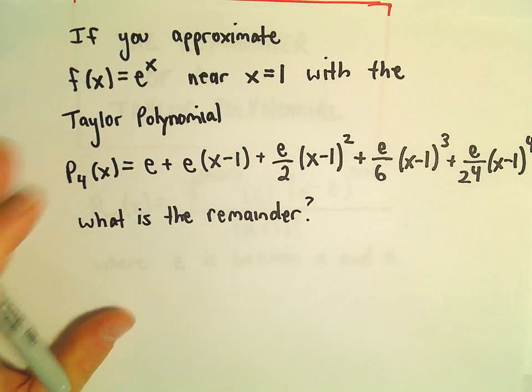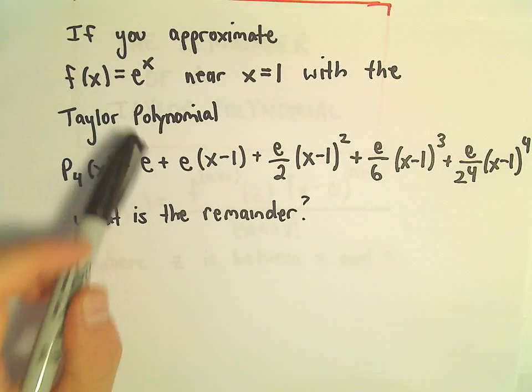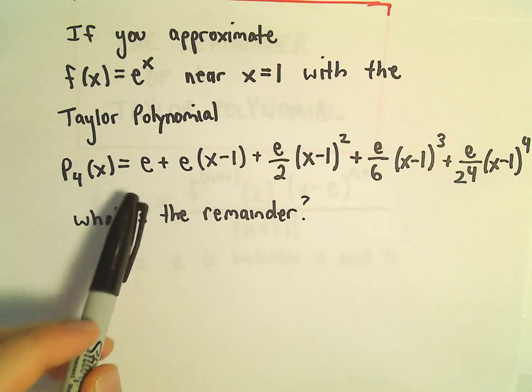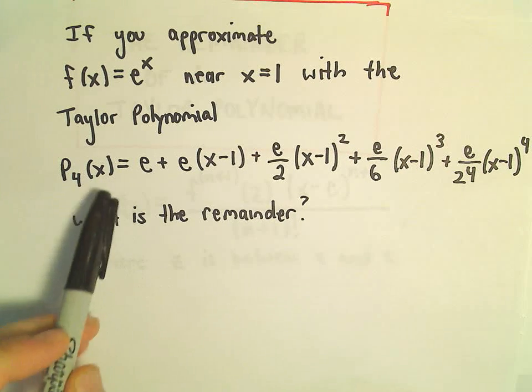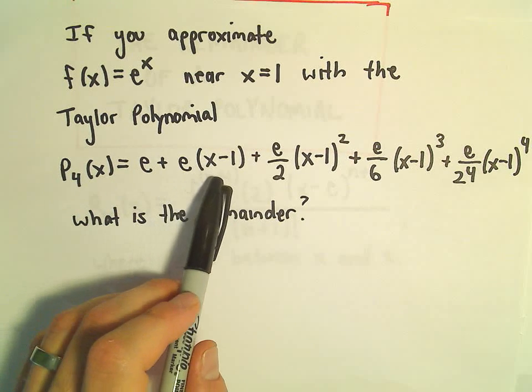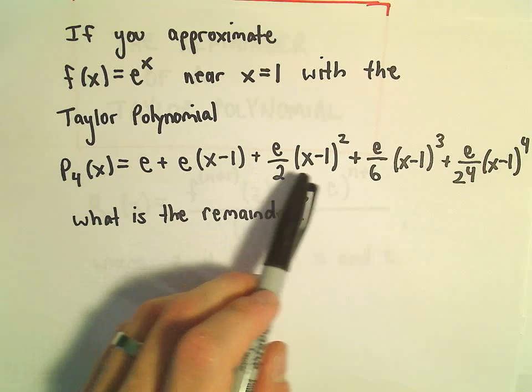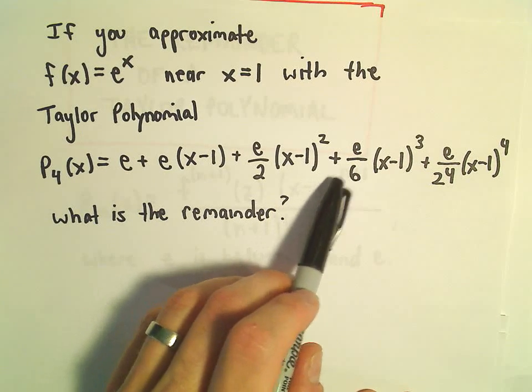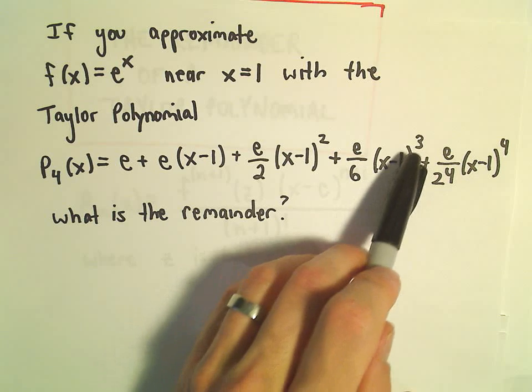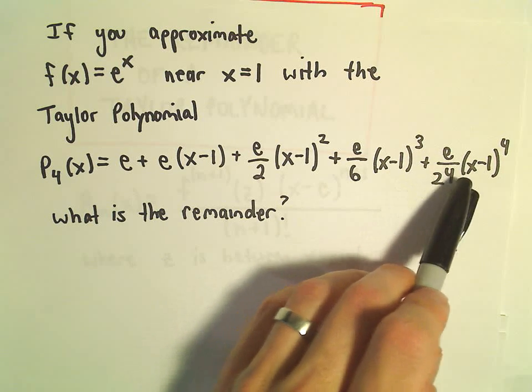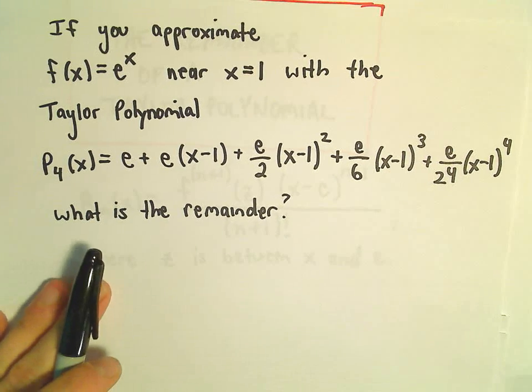Suppose we want to approximate the function e to the x near x equals 1 with the Taylor polynomial: e plus e times x minus 1 plus e over 2 times x minus 1 squared plus e over 6 times x minus 1 cubed plus e over 24 times x minus 1 to the 4th.